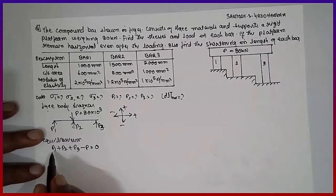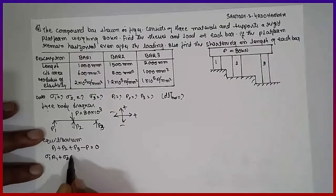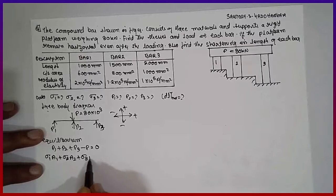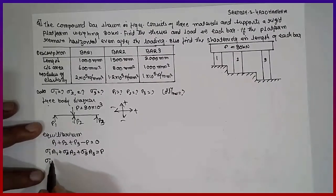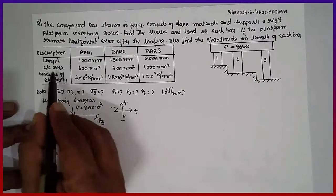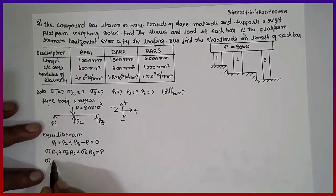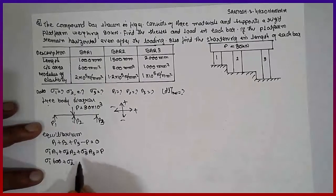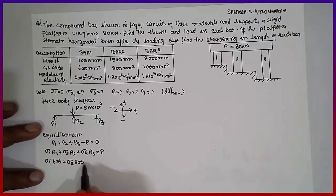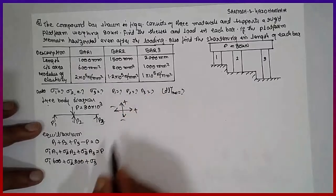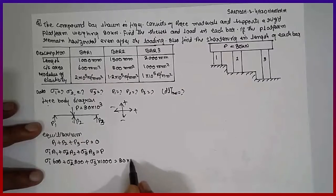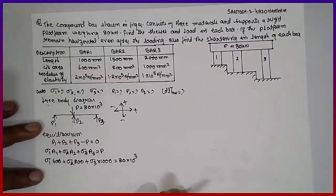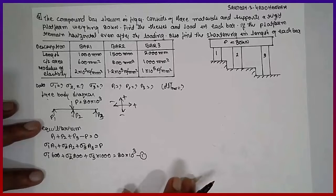Further, substituting in terms of stress: σ1·A1 + σ2·A2 + σ3·A3 = P. We do not know σ1, σ2, or σ3, but the areas are given — A1 = 600, A2 = 800, A3 = 1000. So: σ1·600 + σ2·800 + σ3·1000 = 80 × 10³. This is Equation 1.